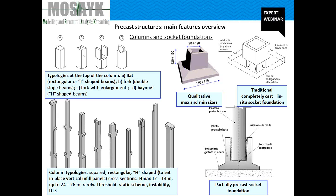Connection between column and foundation: a very common solution is the use of totally or partially precast socket-based foundations. In cases of poor bearing capacity of the soil, traditional alternatives such as piles, beams, or a reinforced concrete slab are used. A problem to be considered with particular care is the connection between reinforced concrete tie beams and socket-based foundations, because of the demand by precasters for simple techniques without cast-in-place concrete, due to the increased use of unskilled labor and time constraints. Additionally, despite the simplified design method, the use of tie beams requires careful attention.